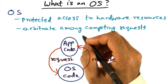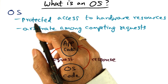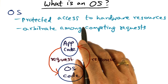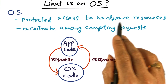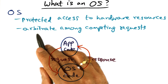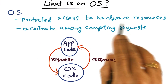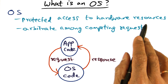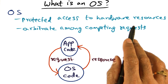Most concisely, an operating system contains code to access the physical resources contained in a computer system and arbitrate among competing requests for those hardware resources coming from multiple applications that may be running simultaneously on the processing platform.